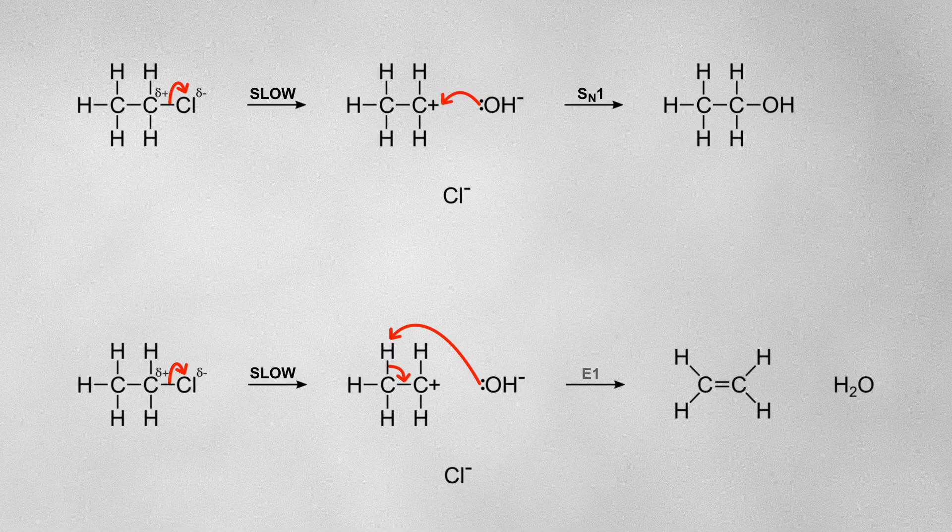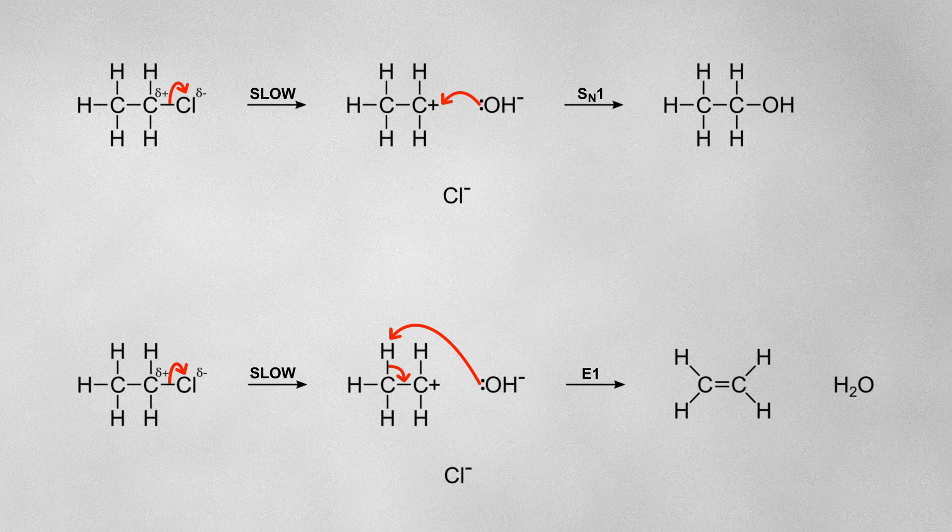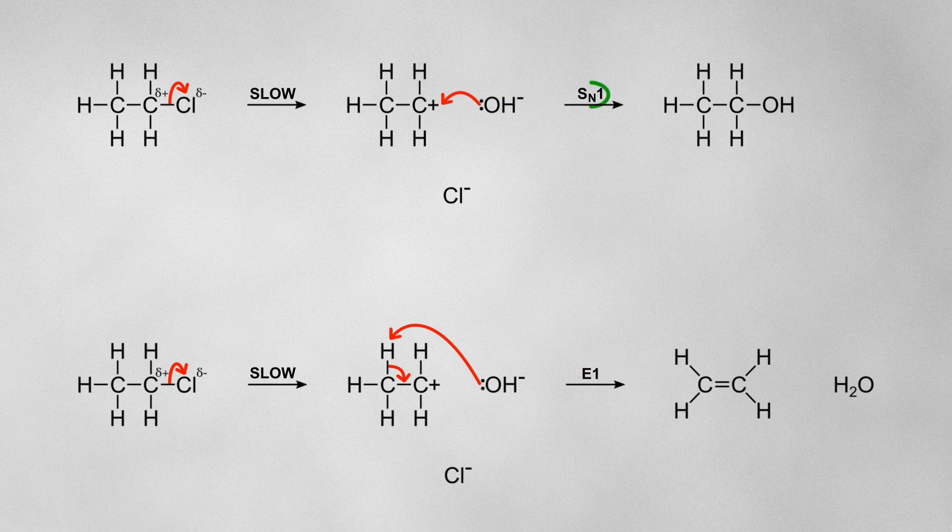This is an elimination reaction as atoms have been eliminated from the original haloalkane. In reality, E1 and SN1 usually occur side by side, giving you a mixture of products.